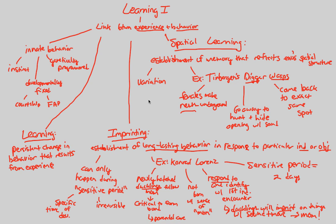That is very, very interesting — very cool. Both imprinting and spatial learning are great examples of this link-establishment behavior that we see through experience. We'll continue our discussion on learning in the next couple of flowcharts.